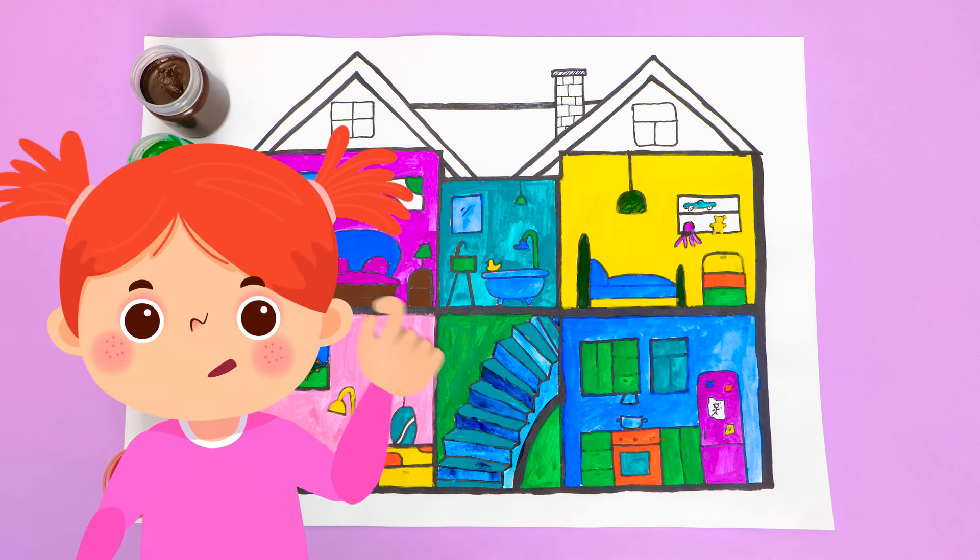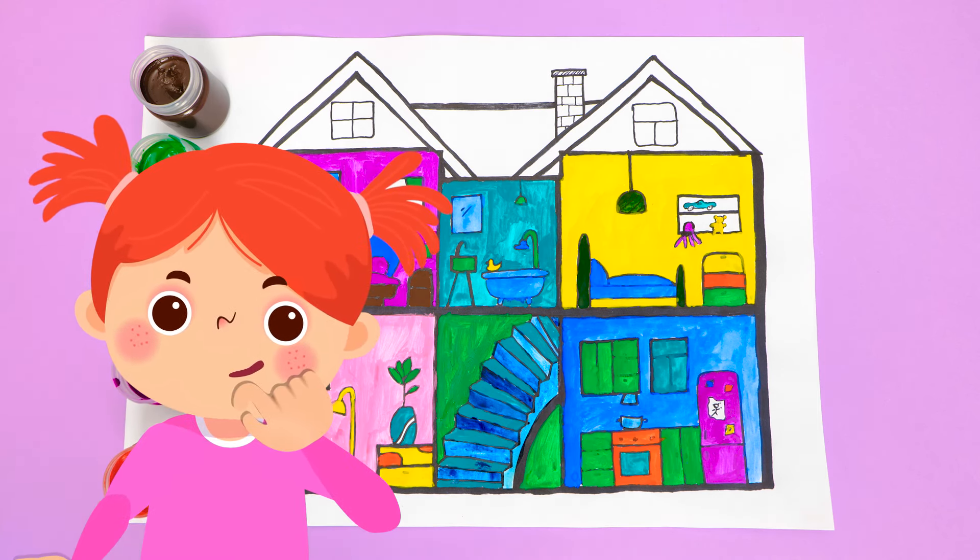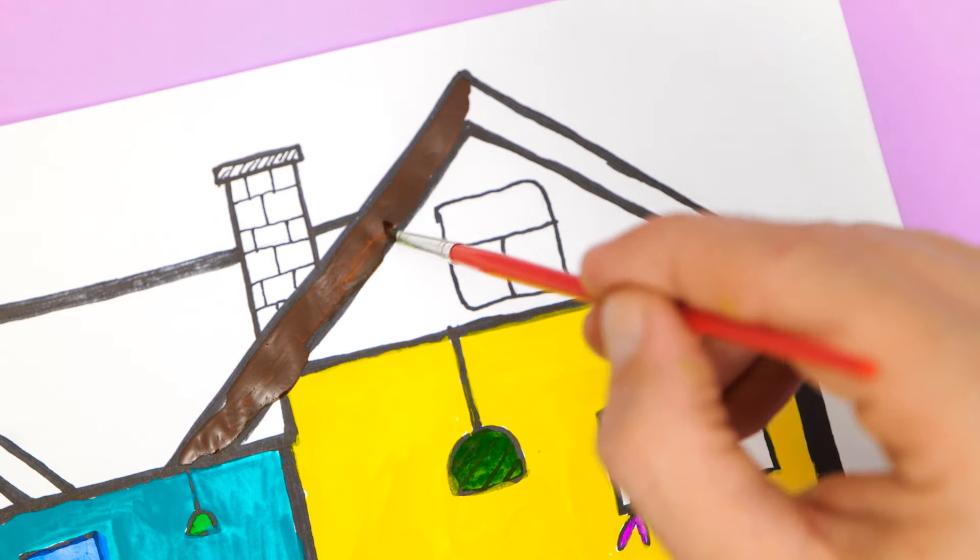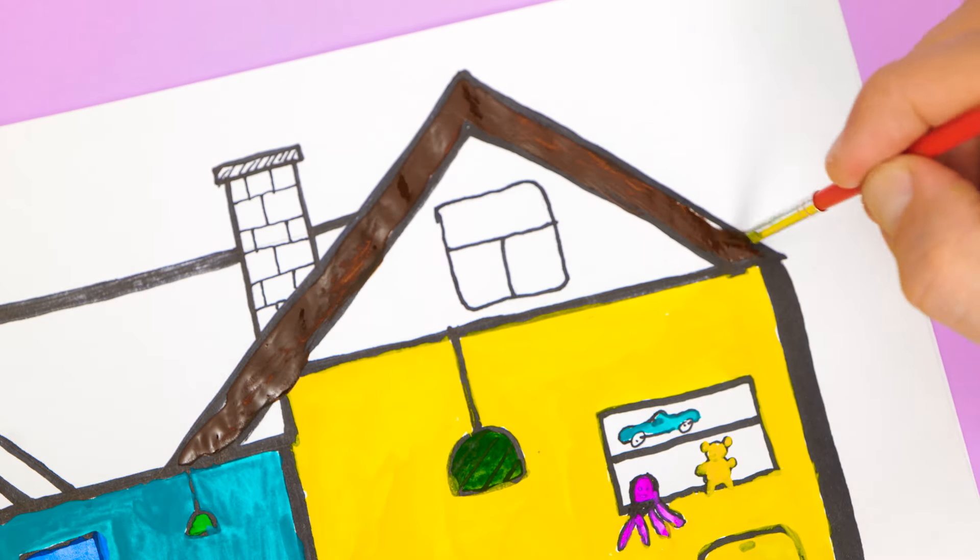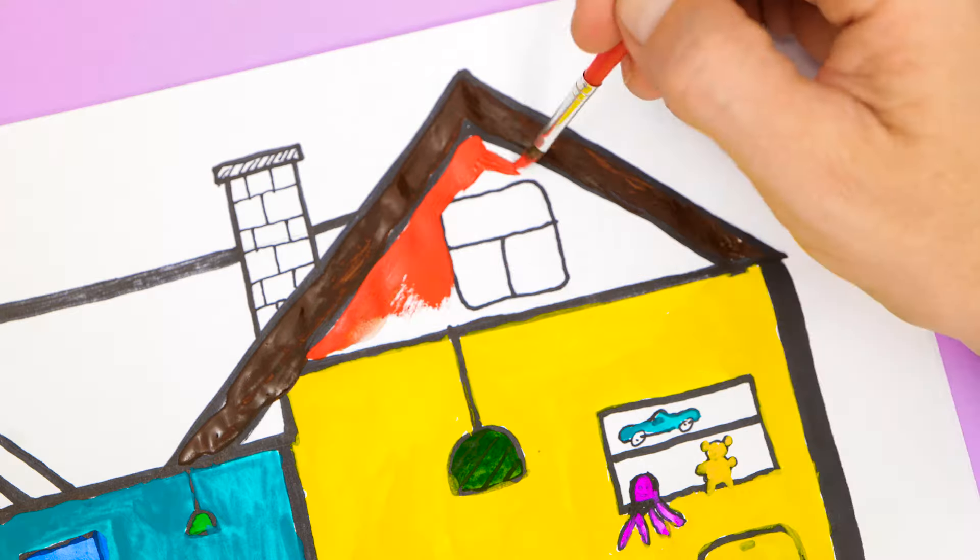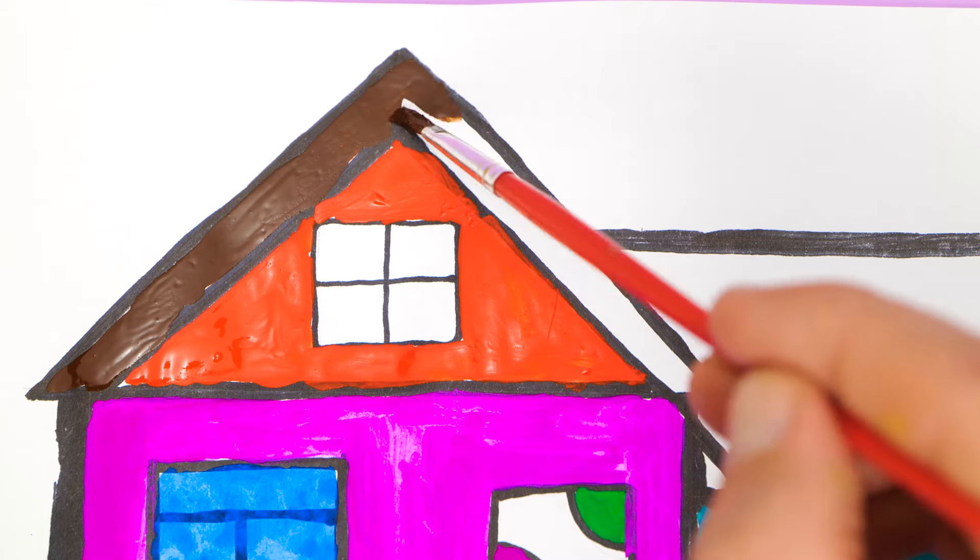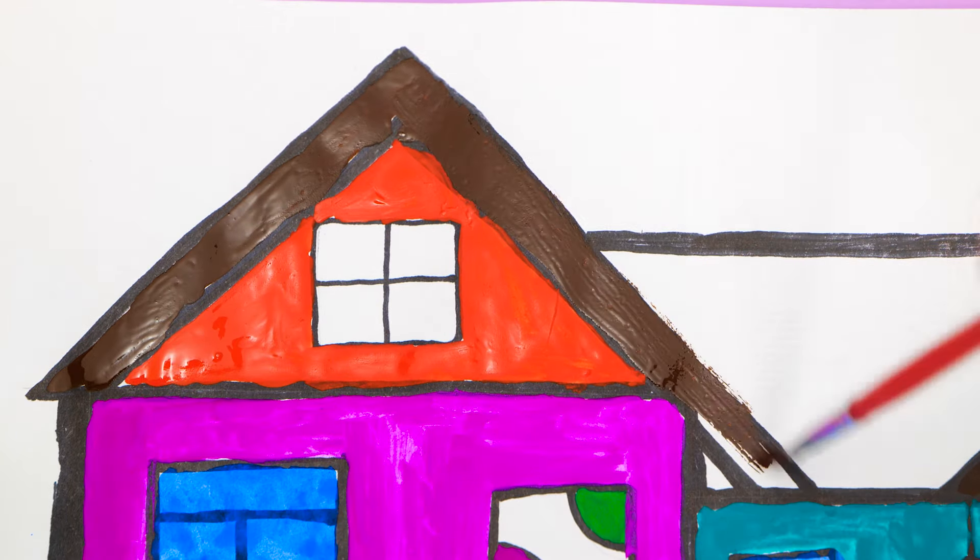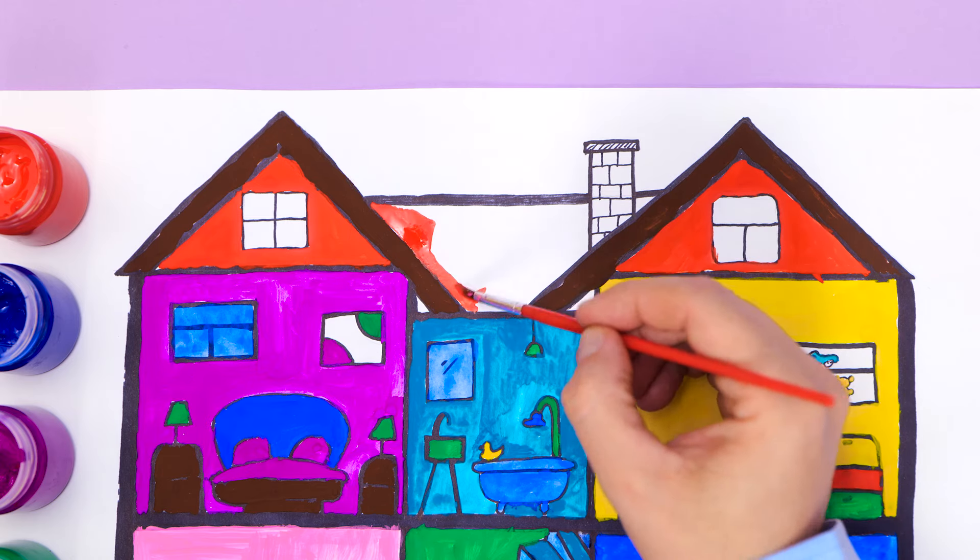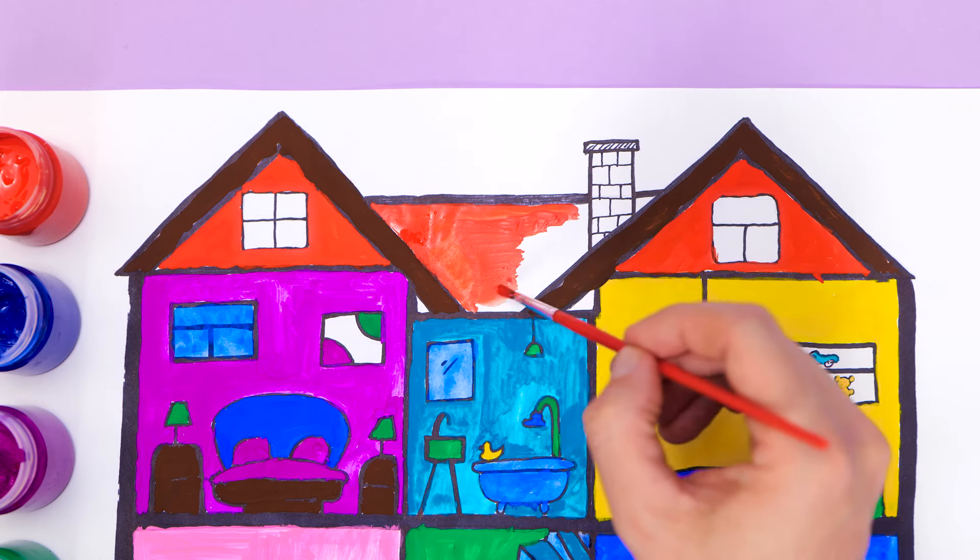Emily, do you have any ideas about what color to paint the roof? Yeah. Let's use brown for the top part of the roof and red for its middle part. Wow, I like how it turns out. I think that a bright roof like this will be visible even from space.